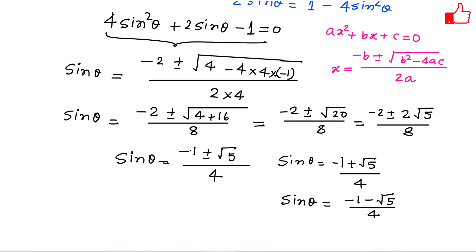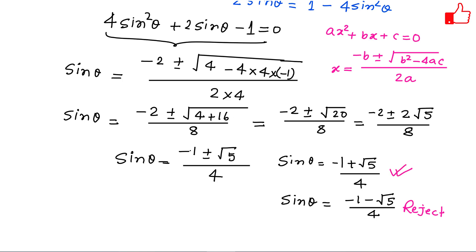The second solution (−1 − √5) / 4 is a negative value and we know sin 18° is in the first quadrant where sin, cos, and tan are all positive. So that solution is rejected. Therefore, sin 18° = (√5 − 1) / 4.